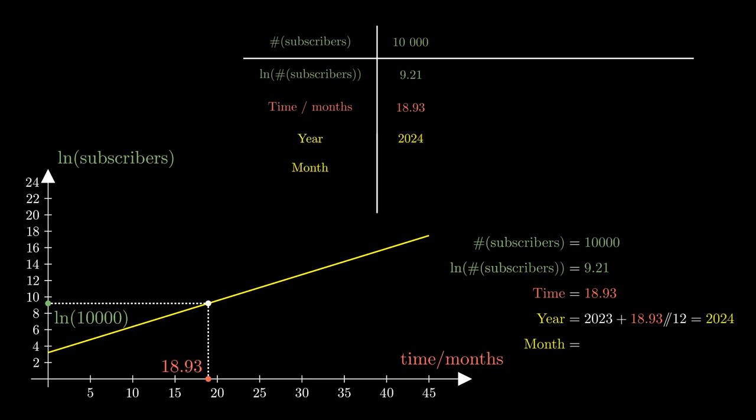Since one year has passed, we're going to subtract 12 months to obtain 6.93 months, and the month in which we obtain 10,000 subscribers is given by rounding up this number. In this case, if we round up 6.93, we will obtain the number 7, which corresponds to July.